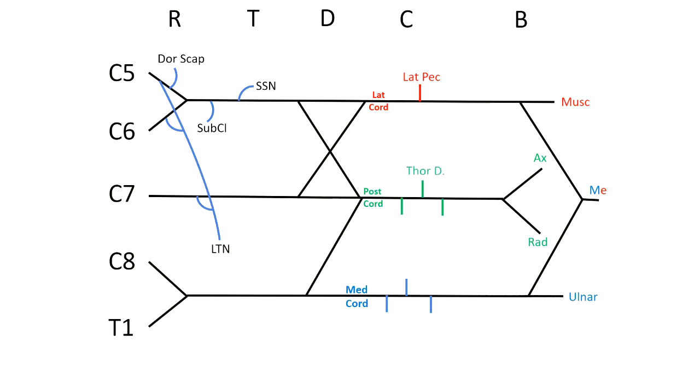The posterior cord gives you the thoracodorsal nerve and the upper and lower subscapular nerves, as well as the axillary nerve and the radial nerve, as we mentioned before.